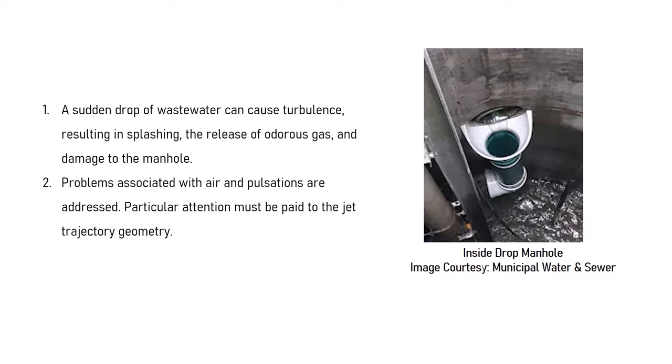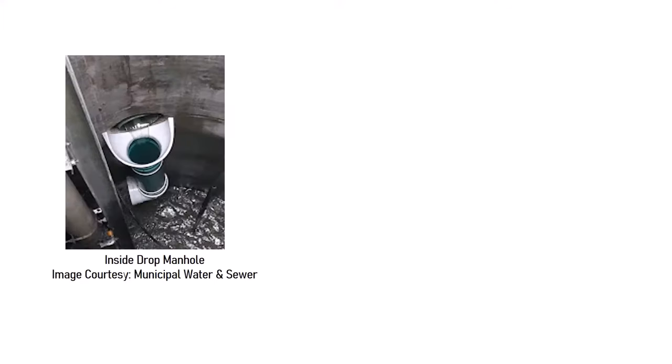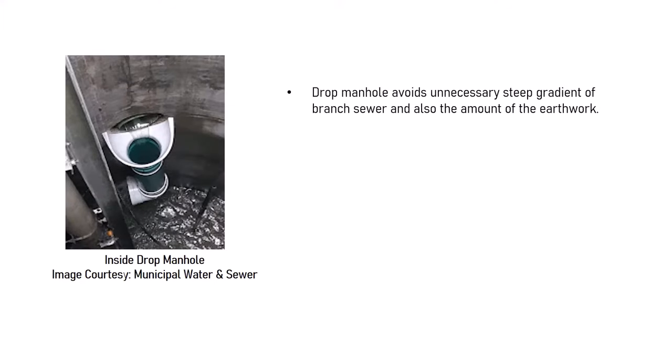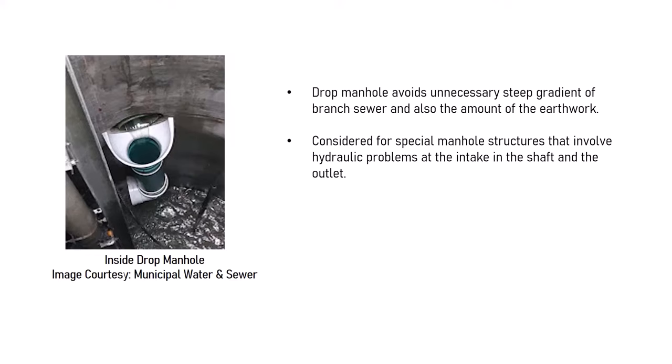Whenever you design a drop manhole, you will have to check the jet trajectory geometry of the fluid passing through that particular sewer line. Drop manhole construction avoids unnecessary steep gradient of a branch sewer, reducing the above-mentioned issues and also the amount of earthwork required to construct the sewer line. Drop manholes are considered special manhole structures that involve coping with the hydraulic problems associated with the intake in the shaft as well as at the outlet.